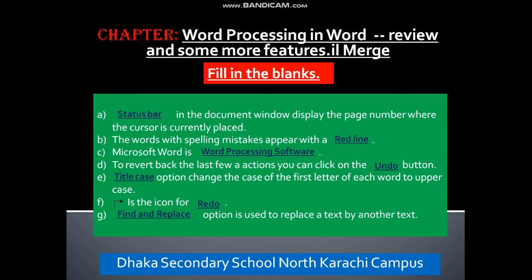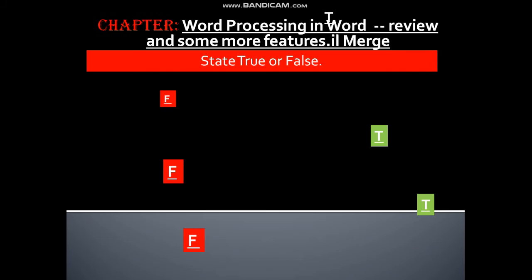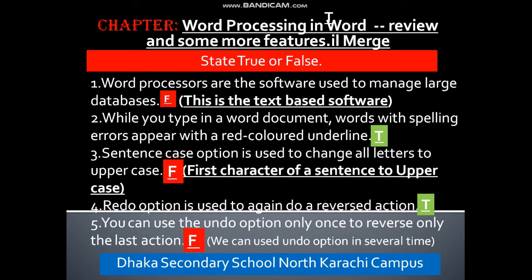Now true and false: Word processing software is used to manage large databases — false. While you type in a Word document, words with spelling errors appear with a red color underline — true. Sentence case option is used to change all letters to uppercase — false.